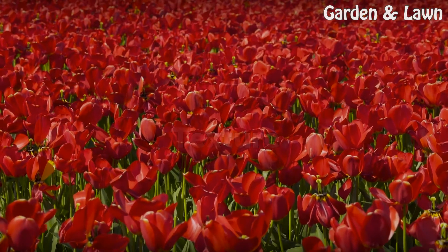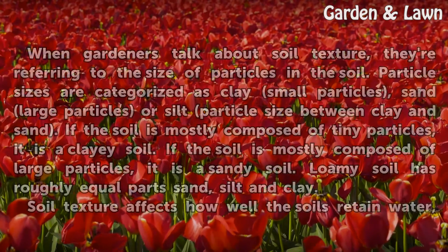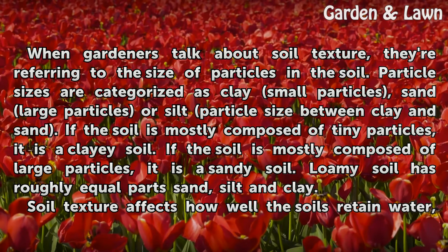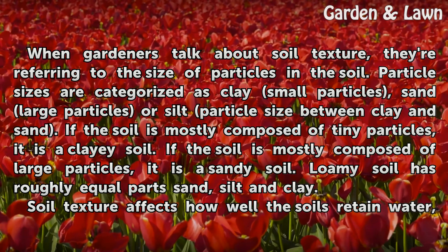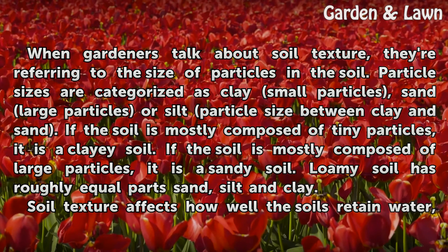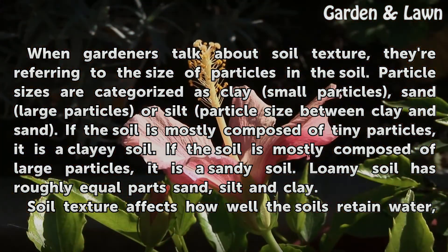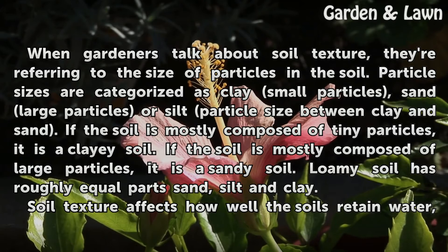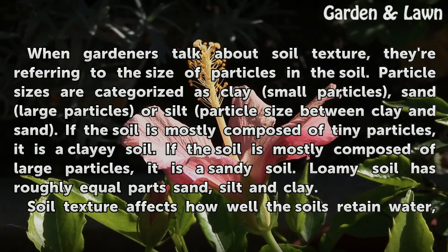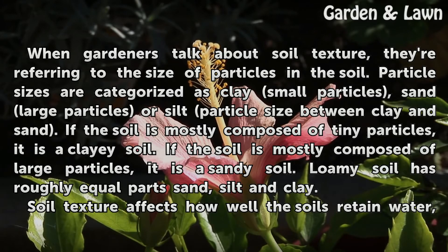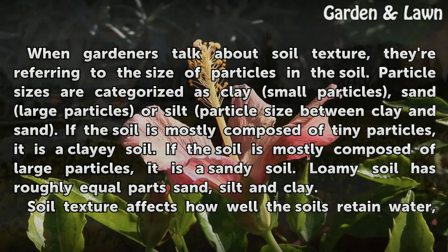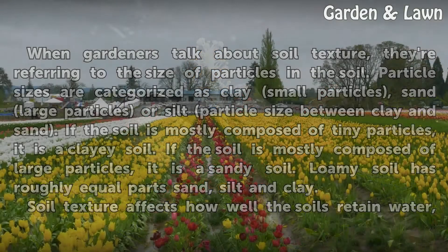Texture: When gardeners talk about soil texture, they're referring to the size of particles in the soil. Particle sizes are categorized as clay (small particles), sand (large particles), or silt (particle size between clay and sand). If the soil is mostly composed of tiny particles, it is a clayey soil. If mostly composed of large particles, it is a sandy soil. Loamy soil has roughly equal parts sand, silt, and clay.